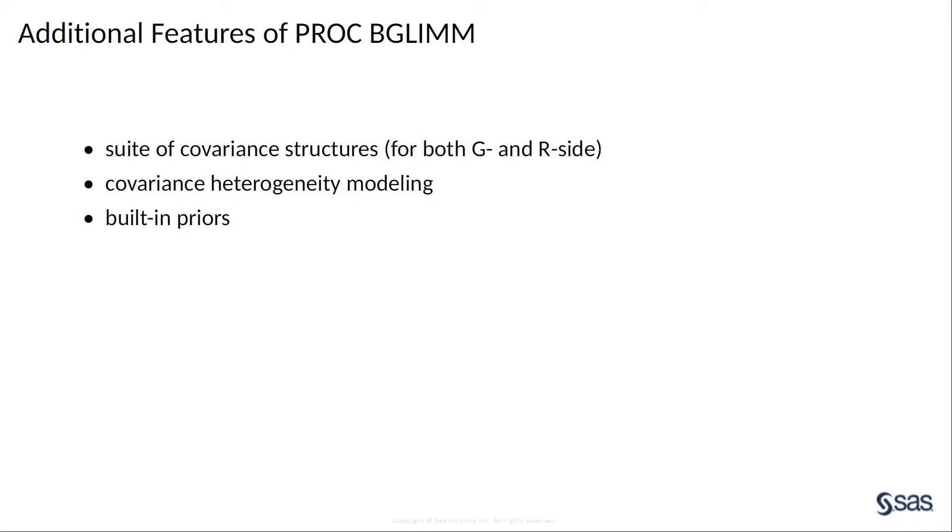PROC BGLIM conveniently provides several built-in priors for you to choose from. If the default non-informative priors are acceptable, you don't need to do anything. If requested, the procedure computes the Deviance Information Criterion, DIC, to assess the fit of a model.